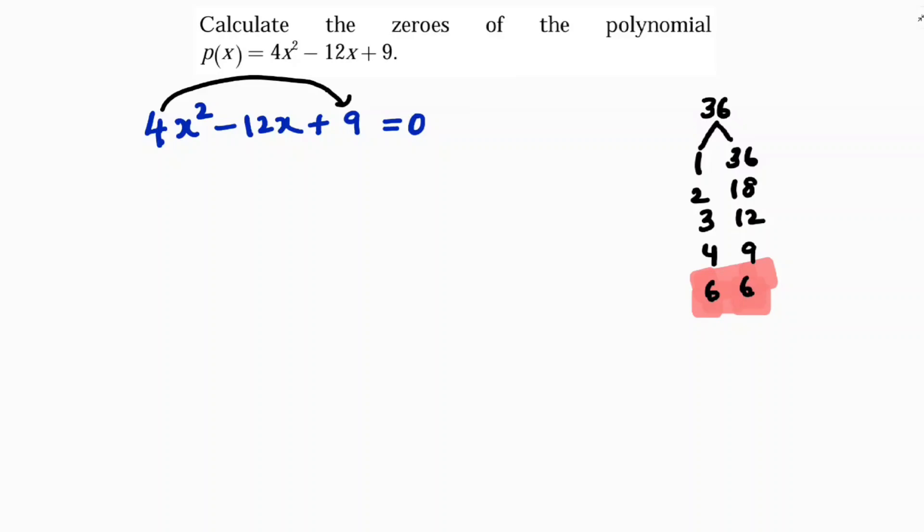Because see, 6 plus 6 is 12, I want minus 12, so minus 6 minus 6 is minus 12. So here the first step: 4x² minus 12x, I'll change it as minus 6x minus 6x plus 9 equals 0.